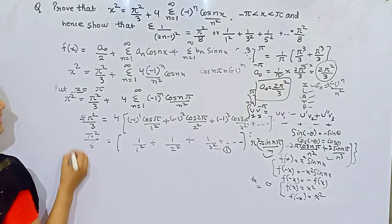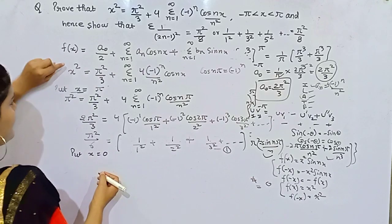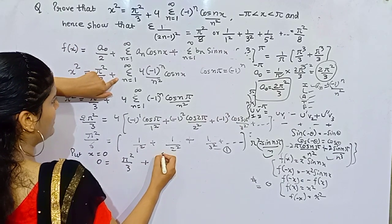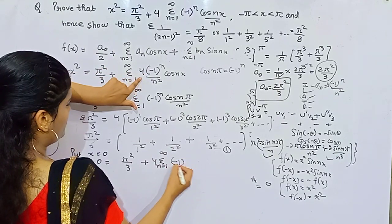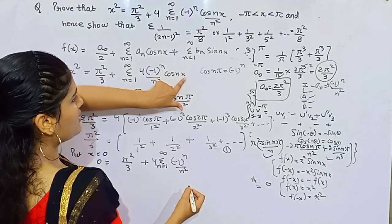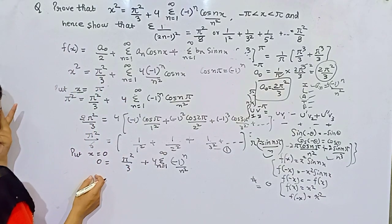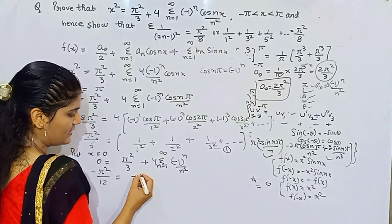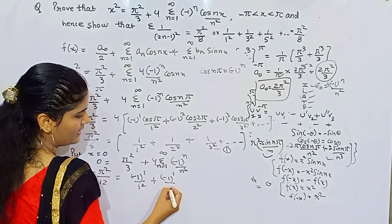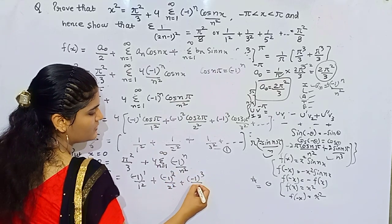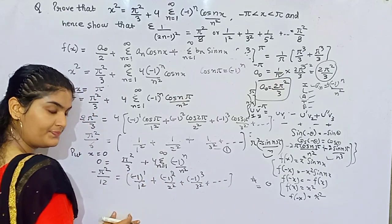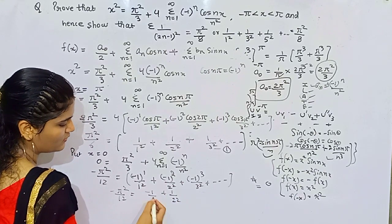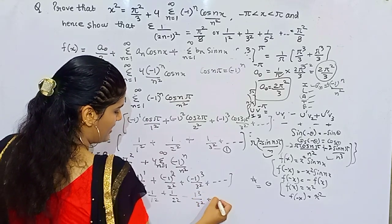Now put x = 0 in the Fourier series: 0 = π²/3 + 4 × summation of (−1)^n/n² × cos(0). Since cos(0) = 1, this becomes: 0 = π²/3 + 4 times the summation of (−1)^n/n². Rearranging and taking 4 times 3 = 12: −π²/12 = (−1)¹/1² + (−1)²/2² + (−1)³/3² + ... which equals −1/1² + 1/2² − 1/3² + ...